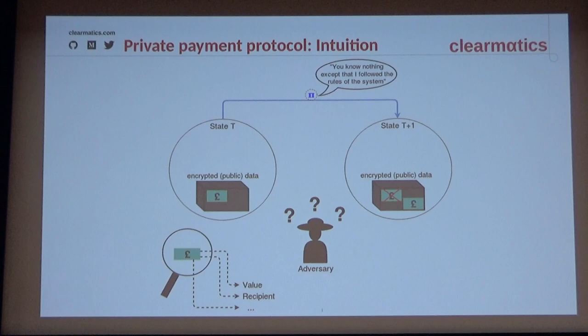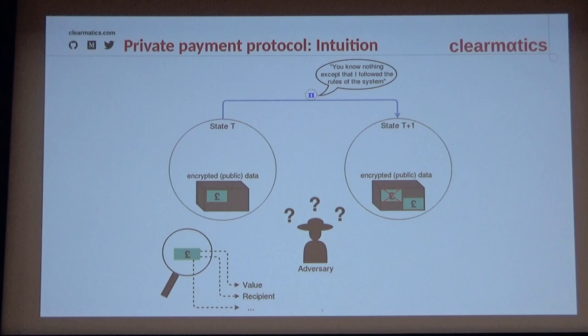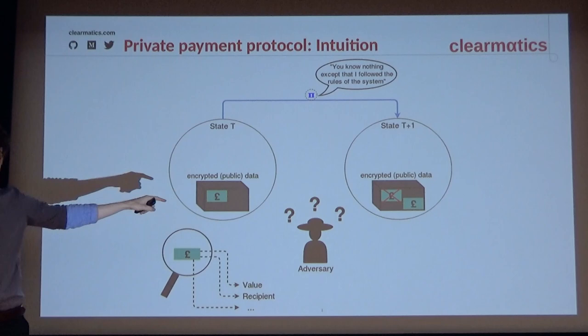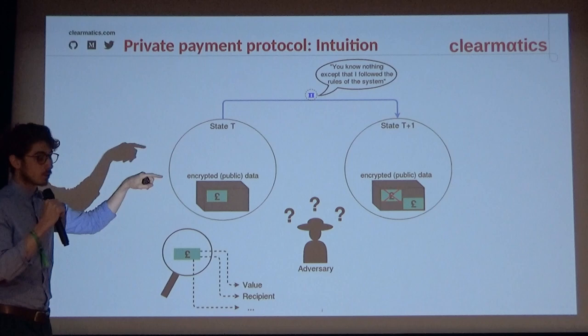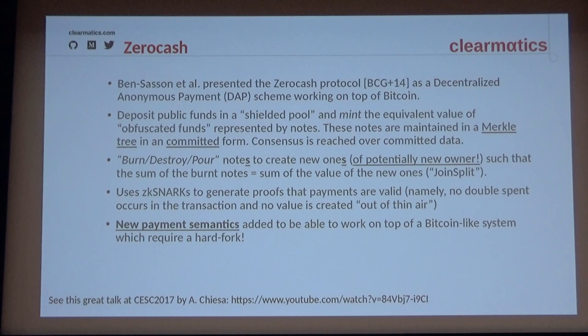Going back to the initial problem: we have some encrypted state, a zero-knowledge proof, and another encrypted state. We want to show we've done something that doesn't violate the rules — not creating value. What if this encrypted thing is actually encrypting a pool of notes? A note is a data structure holding a value, a recipient, and other attributes. The proof shows I own a note in the pool, I'm spending it to create another note of the same value — possibly changing the recipient — which is essentially a payment. This is encapsulated by the Zerocash protocol.